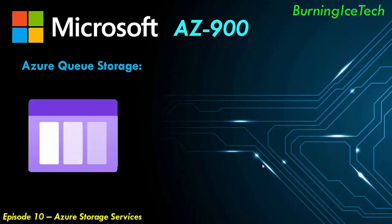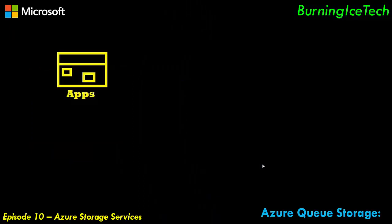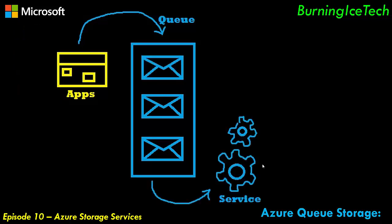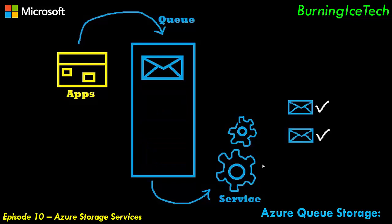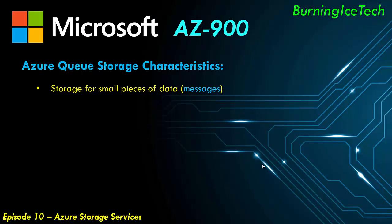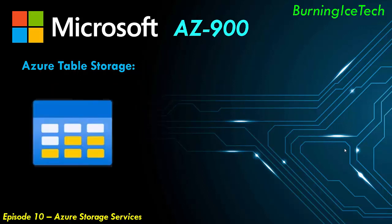Our next topic is Azure Queue Storage. This is a small but important service when building applications. When an application has several tasks that each take some time to complete, you can output those into Azure Queue as separate messages. This allows background processes and other services to take those messages from the queue at their own pace and process them asynchronously, offloading your front-end application and allowing you to pick more suitable services for background processing.